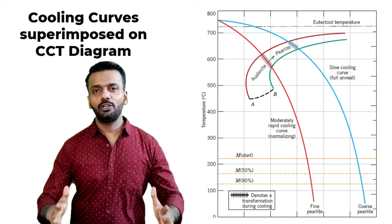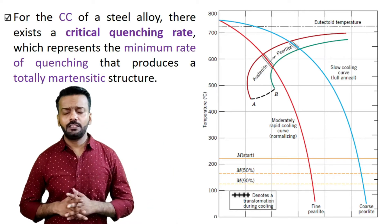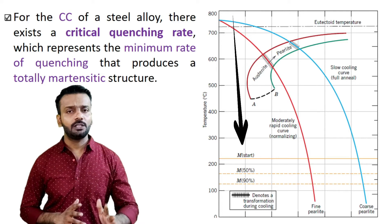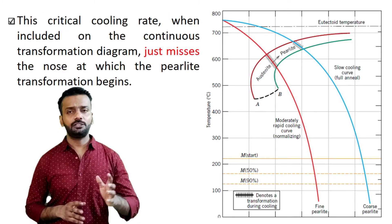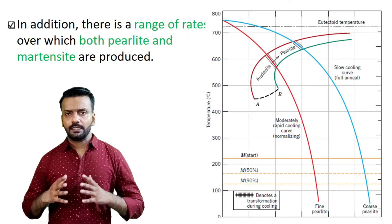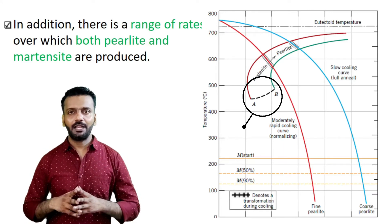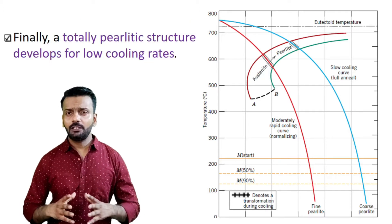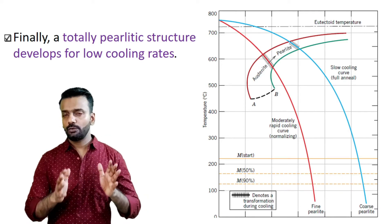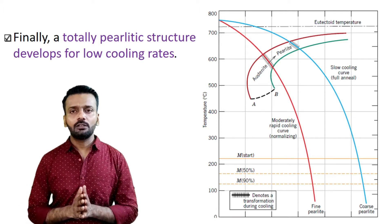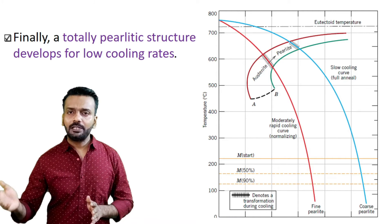Let us superimpose a couple of cooling curves on the TTT plot and see what structure we get at the end of the transformation. When you miss the nose and cool the material, you will get martensite structure. Under any circumstances, if you touch the nose of the TTT plot, you will get pearlite. In addition, there will be a range of cooling rates where you will get both martensite and pearlite structure together. If you relatively slow-cool the material, you will only get pearlite structure. So when you do fast quenching and miss the nose, you get martensite; at an intermediate rate, you get martensite and pearlite; and when you cool very slowly, you completely get pearlite structure.